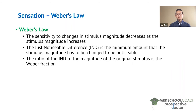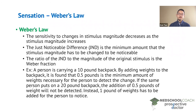An important idea behind Weber's law is that it's not about the absolute change in stimulus magnitude — it's actually the fractional change in the stimulus magnitude. So the ratio of the JND to the magnitude of the original stimulus is the Weber fraction.